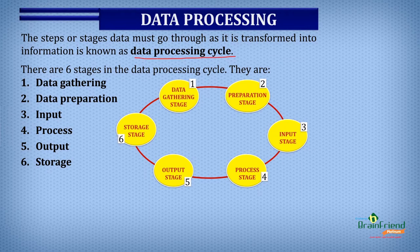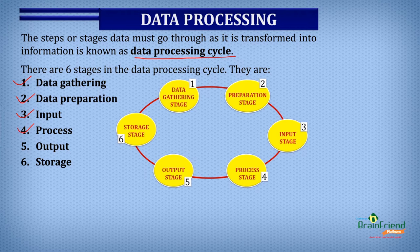In data processing, data must go through some stages or steps for information to be produced. These stages form what we call the data processing cycle. There are six stages: the data gathering stage, the data preparation stage, the input stage, the process stage, the output stage, and the storage stage.